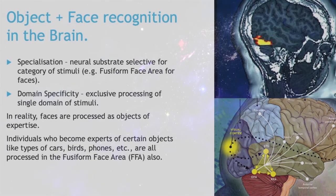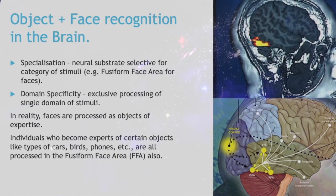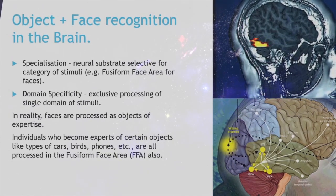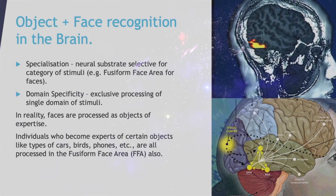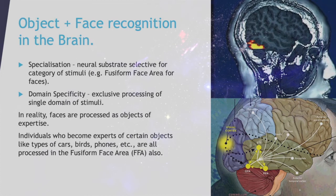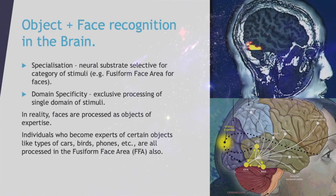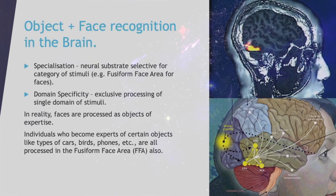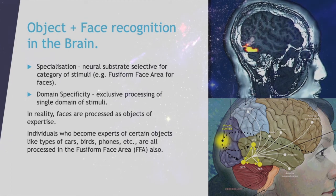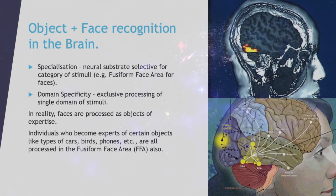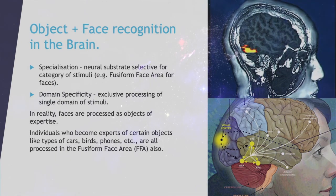Specialization involves neurosubstrates selected for the categorization of certain stimuli — for example, the fusiform face area (FFA) for faces. One must also consider domain specificity, which is the exclusive processing of single domains of stimuli. In reality, faces are processed as objects of expertise. Individuals who become experts of certain objects — like types of cars, birds, or phones — have these processed in the FFA as well, and experts are able to discriminate between finer distinctions within their domain.